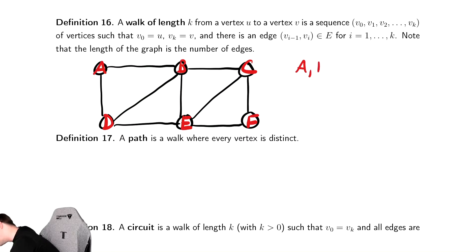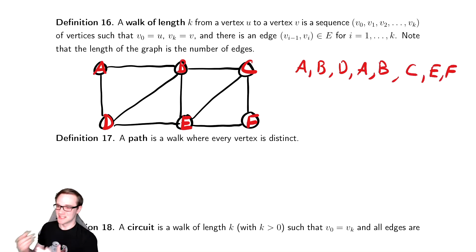You could go A, B, D, A, B, C, E, F. Is that what I said? It doesn't really matter. So there's an example of a walk.